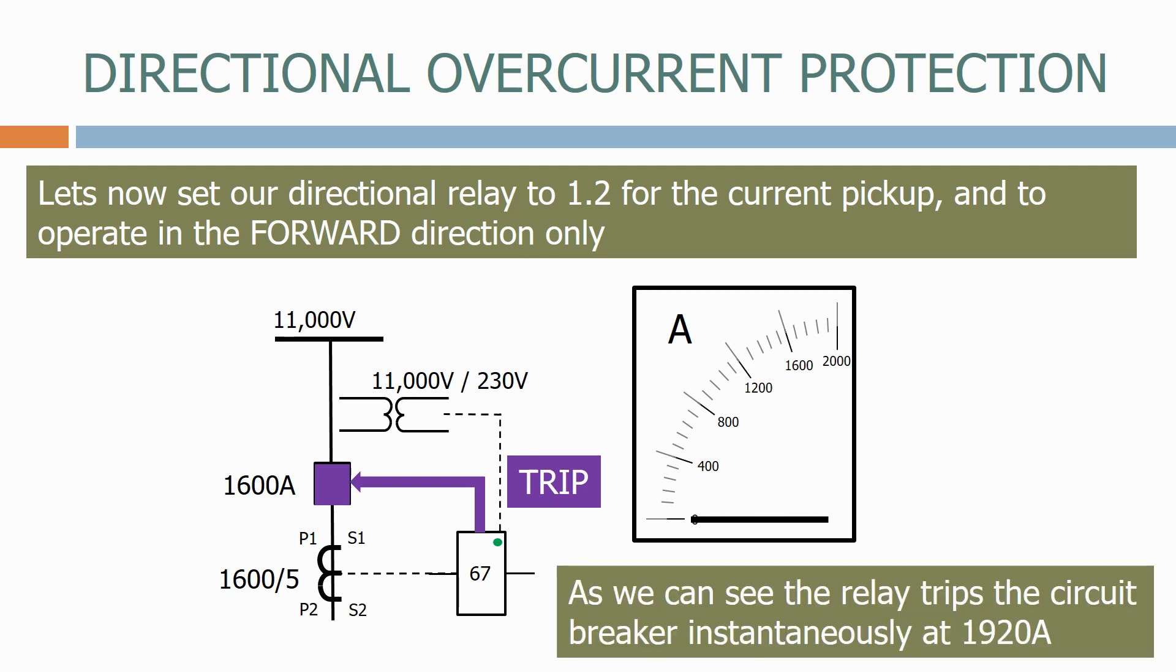As we can see, the relay trips the circuit breaker instantaneously at 1920 amps.